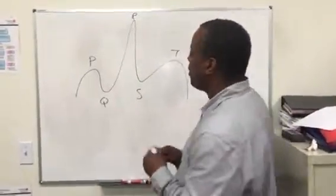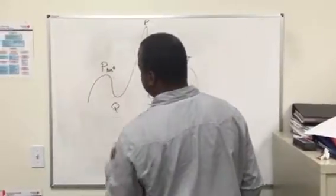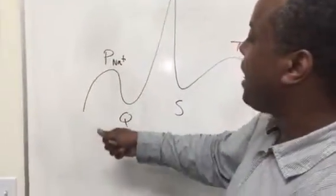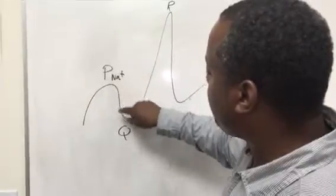The P wave represents sodium. This is when fast sodium channels open up, then they close. As soon as they open, sodium rushes inside the cell, potassium rushes out, then you get this depolarization. So this is atrial depolarization.